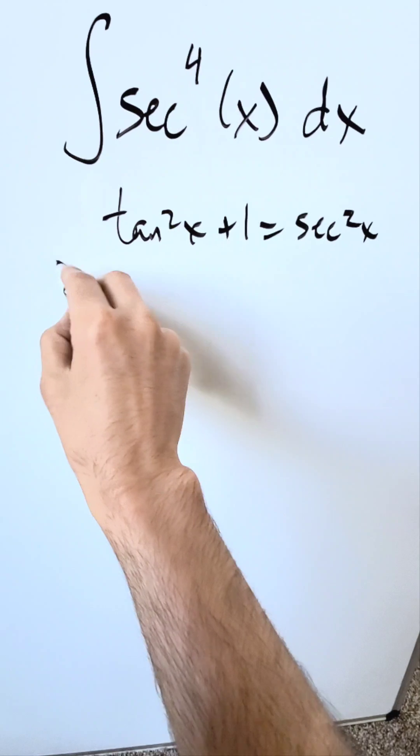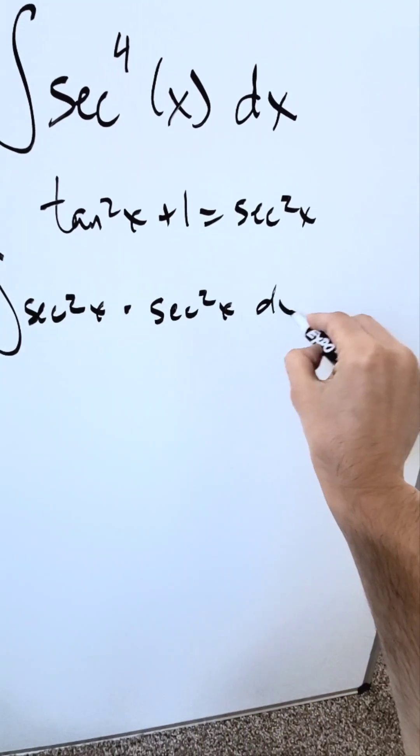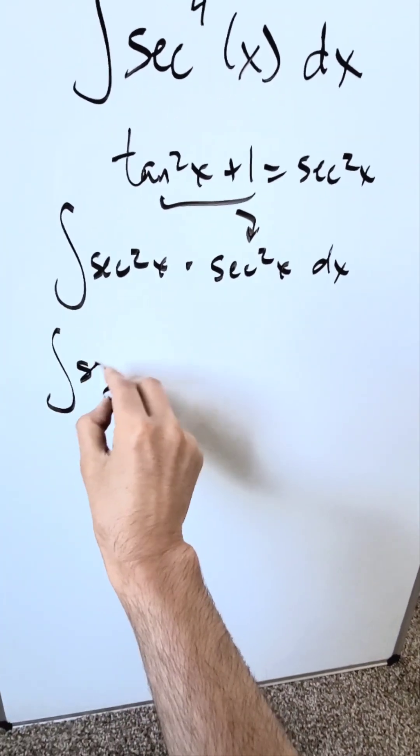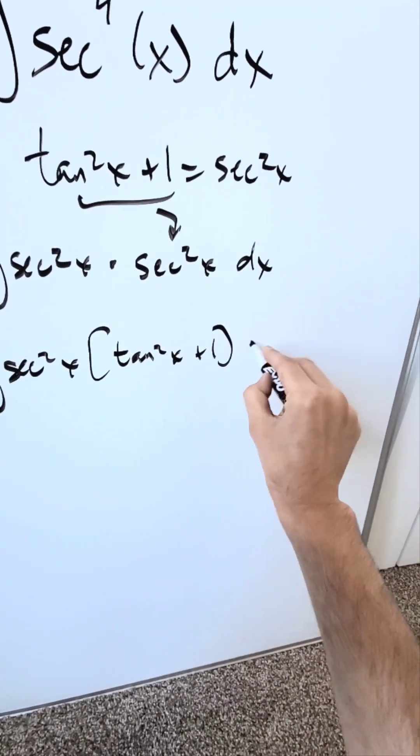You'll bring it in over here. You have here a secant squared x times a secant squared x dx. You'll bring this right over here. Bring in your identity. You're looking at a secant squared x times tan squared x plus 1, then dx.